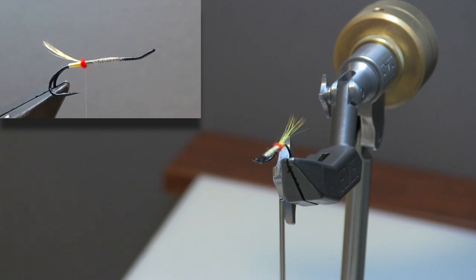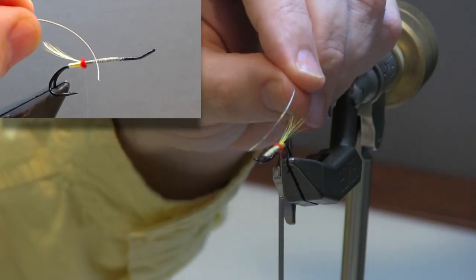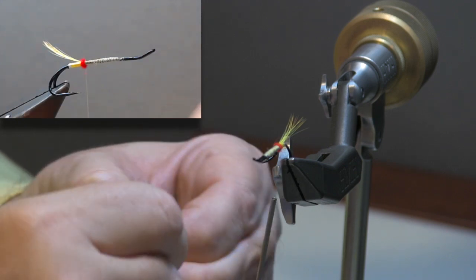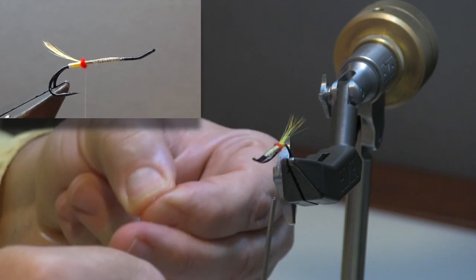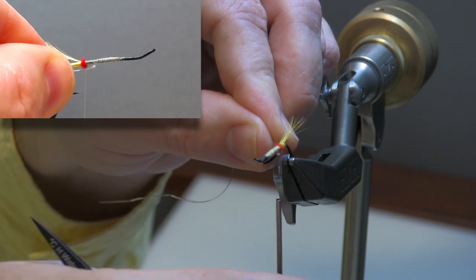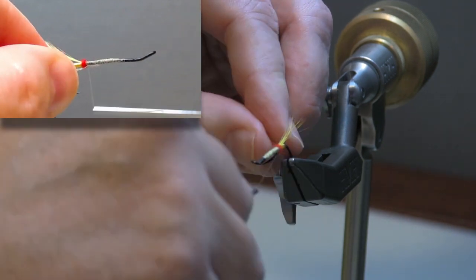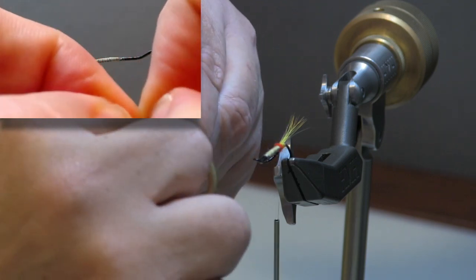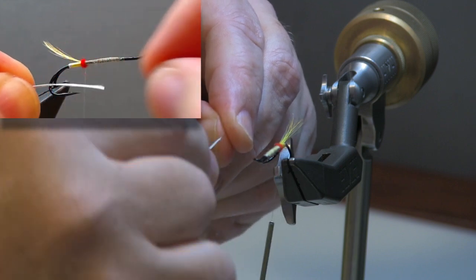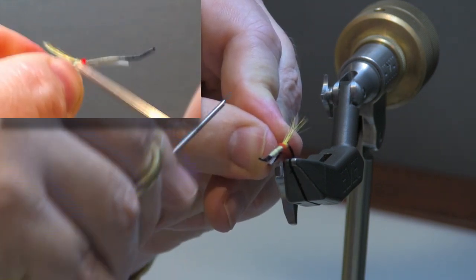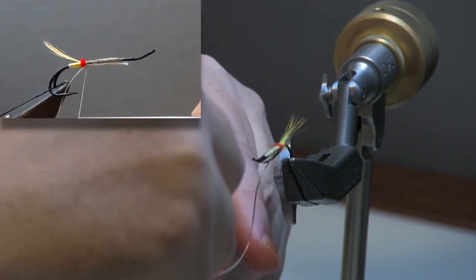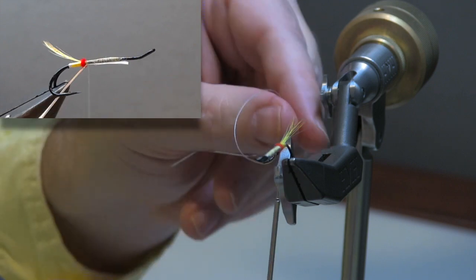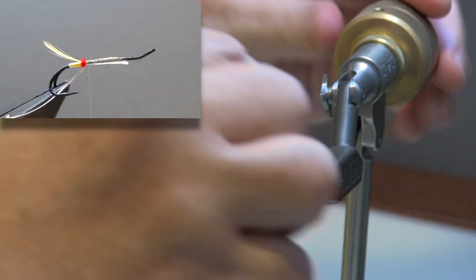The next step is the rib. The rib is a medium oval silver. The size on these will vary depending on what size you're tying. I'm tying this on a size 4, so a medium is certainly appropriate. If you're going to tie these down on a size 10 or 12, then you'd probably stay with a fine tinsel. Again, we're going to tie this in at the core. But I want to make sure that we're preparing a smooth underbody for that tinsel to come over the top. So I'm tying this in underneath, two to three turns to hold it in place. I'm just going to take that tinsel and set it out of the way.